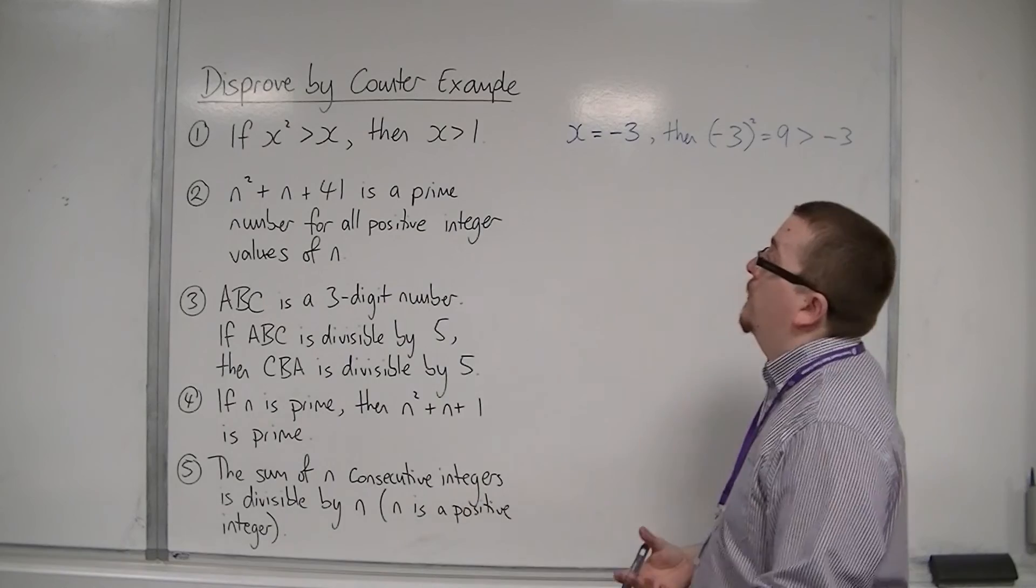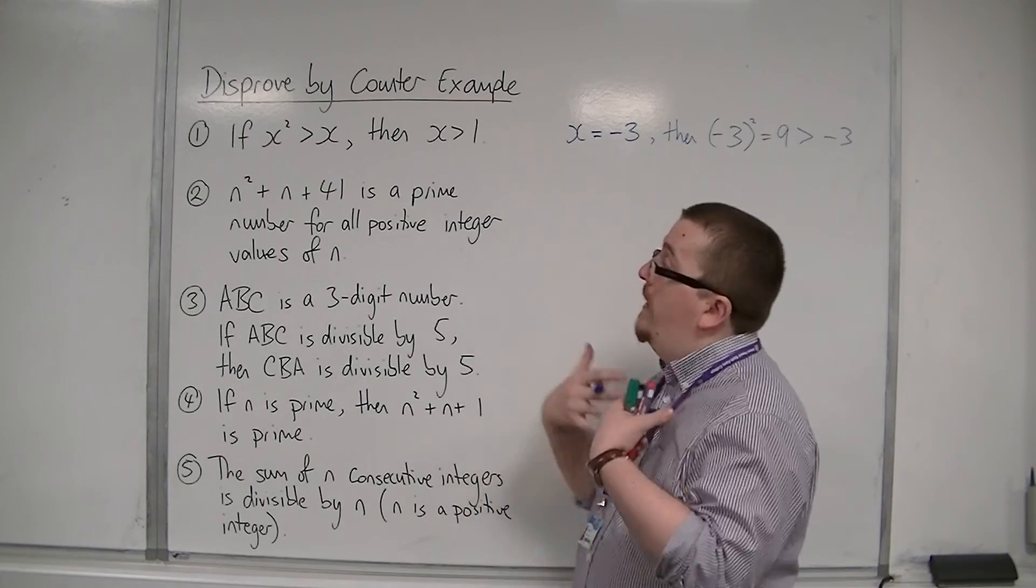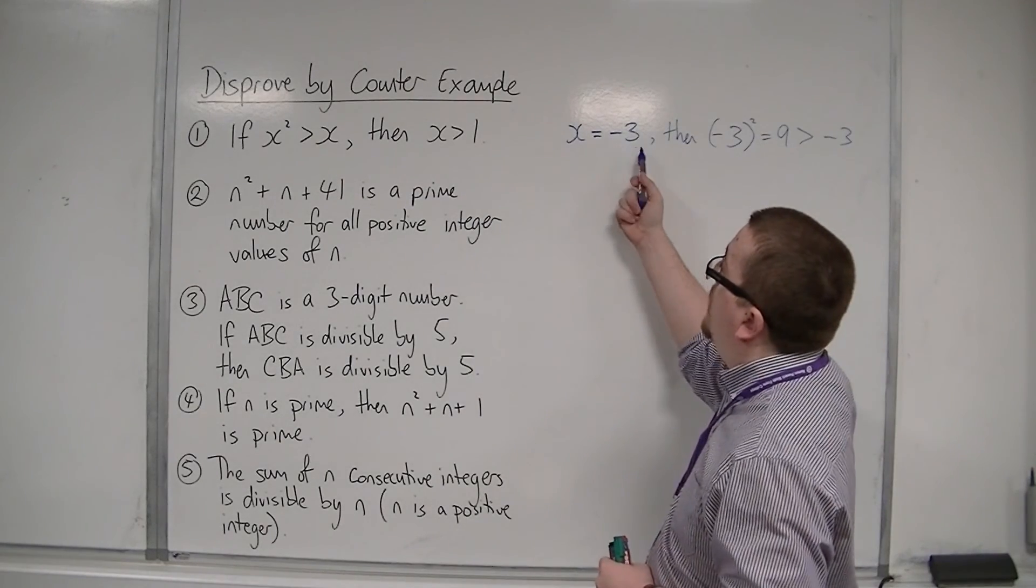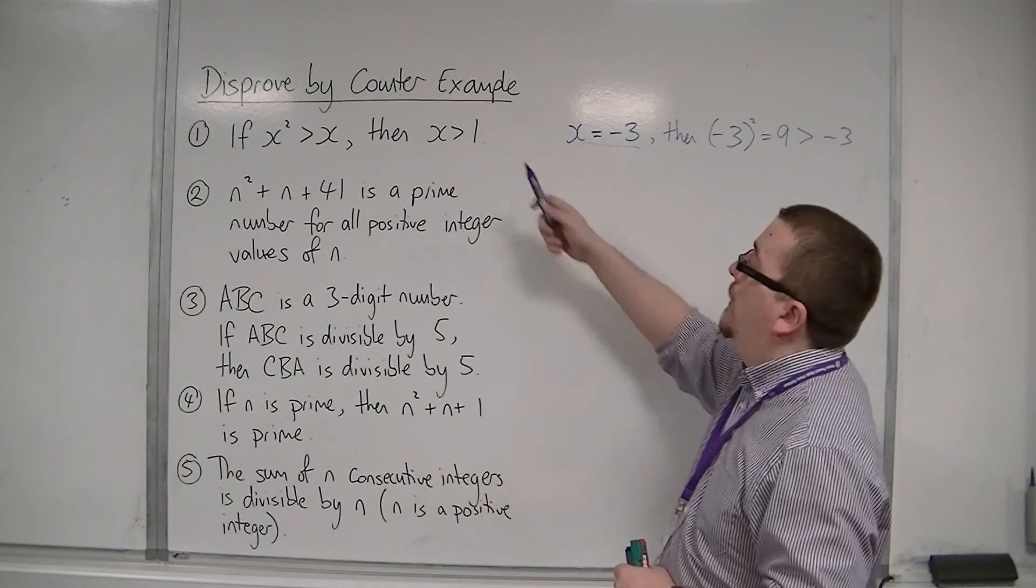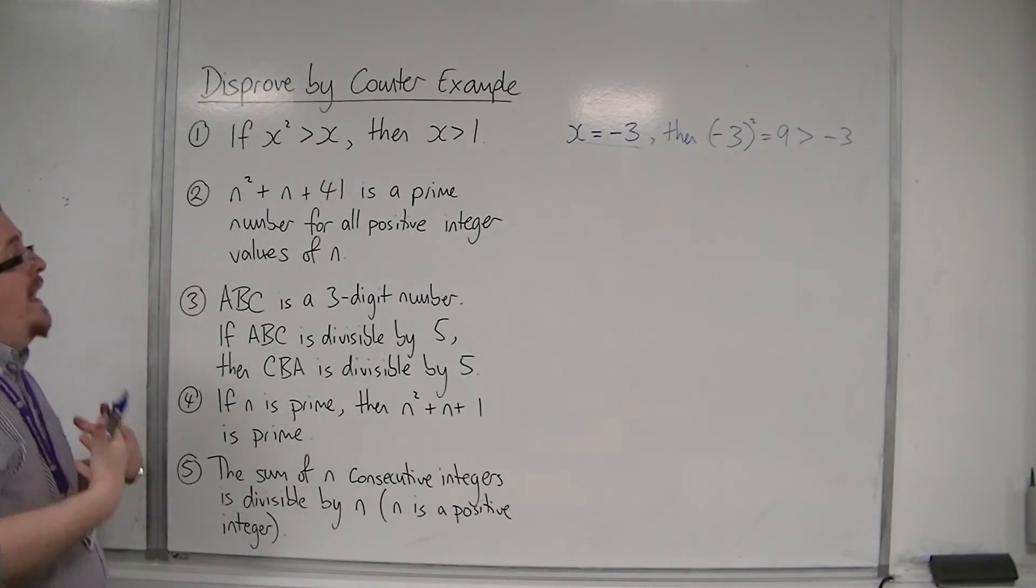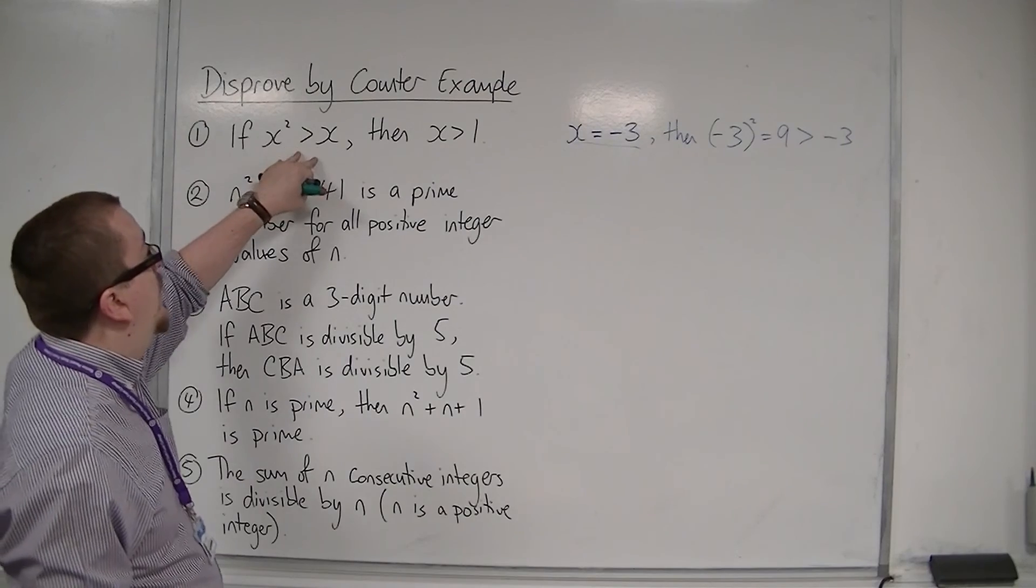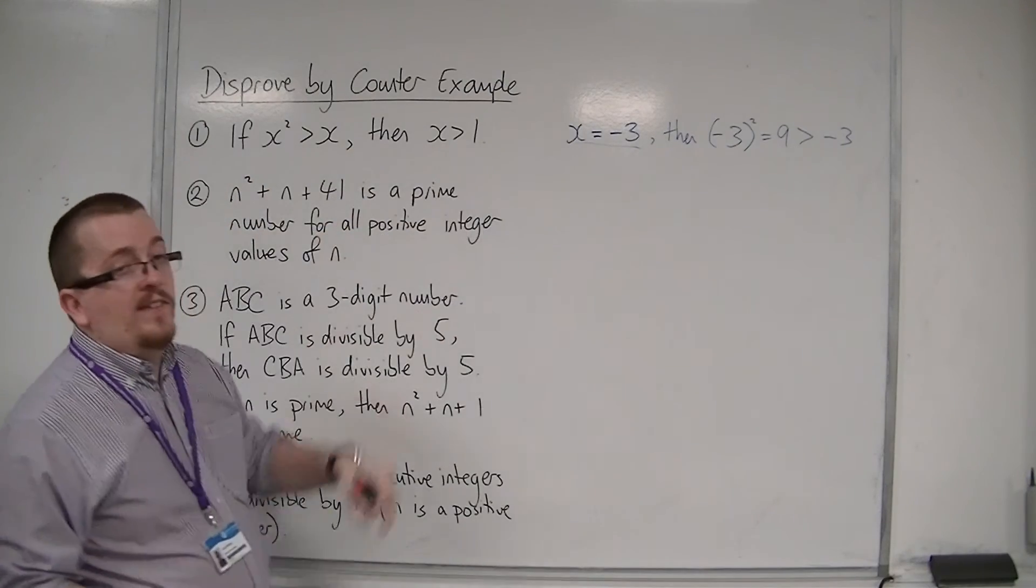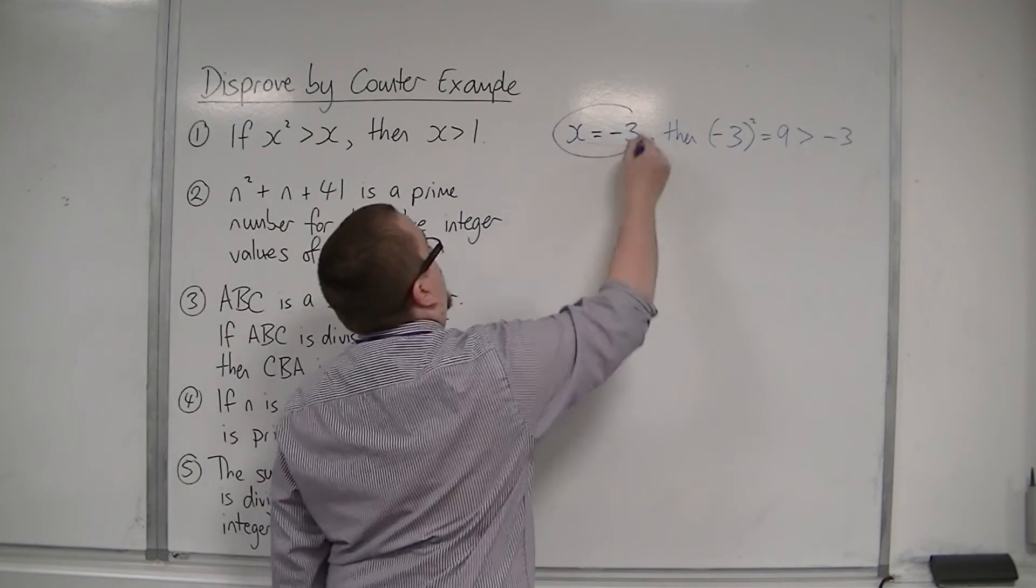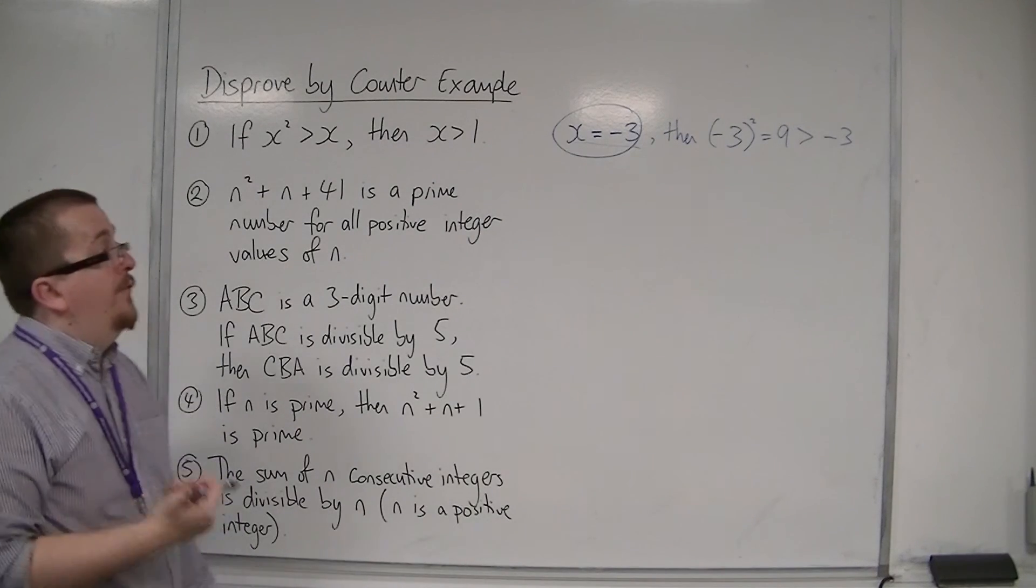So the first bit here it works with. So x squared is definitely greater than x. And then it's saying, if that's true, then x is greater than 1. But we chose x is minus 3. So clearly that is false. It does not imply that x must be greater than 1. Because we found that if x is minus 3, this works. And we found that x is actually less than 1.